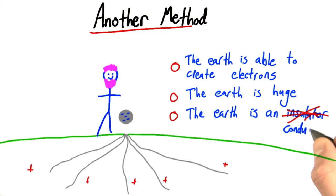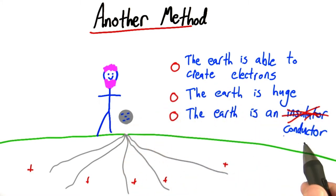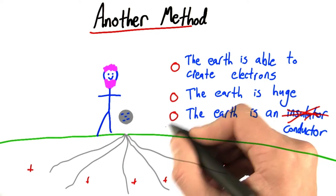Well, the first thing I want to clear up is that the Earth is not an insulator. The only reason this method works at all, that we can draw these electrons up from the Earth, is because the Earth is more of a conductor than an insulator. So that was a bad answer.